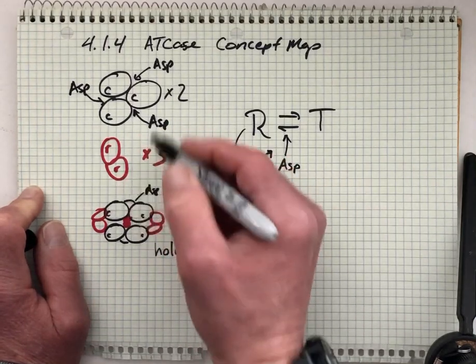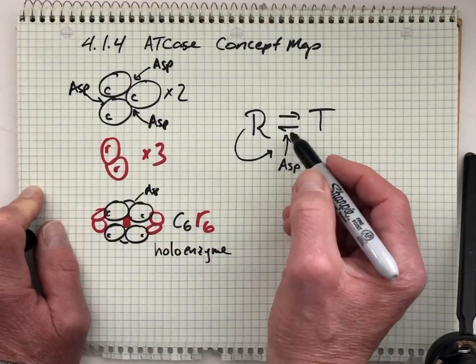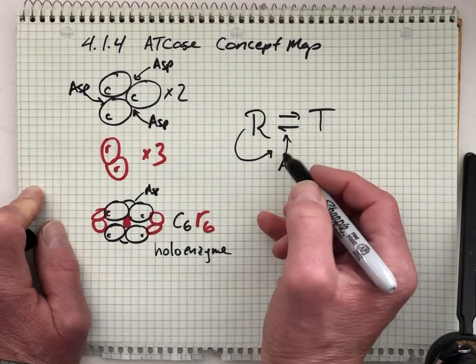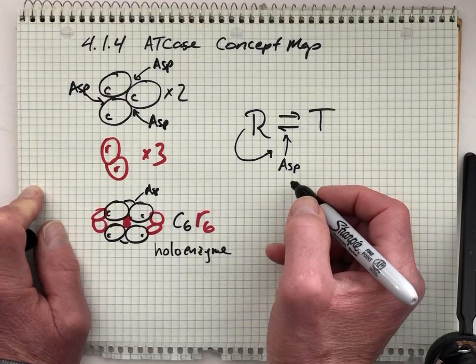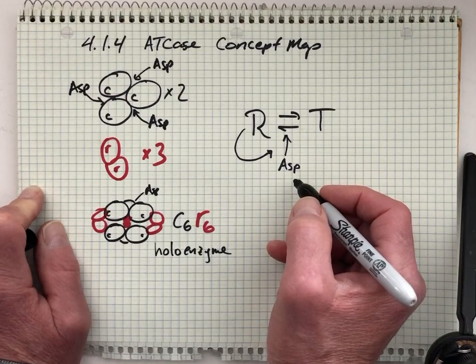Once you've bound a few of these sites, now the system switches over to the R form, and now it's relatively easy to bind the remaining, to occupy the remaining sites with aspartate, the substrate.